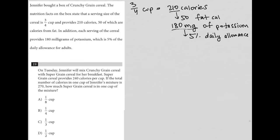So question 19 says on Tuesday, Jennifer will mix crunchy grain cereal with super grain cereal for her breakfast. Super grain cereal provides 240 calories per cup. So again, this was all about crunchy grain, CG, but for super grain SG, we're getting one cup is equal to 240 calories. If the total number of calories in one cup of Jennifer's mixture is 270, how much super grain cereal is in one cup of the mixture? Okay, so quite a bit is said there.